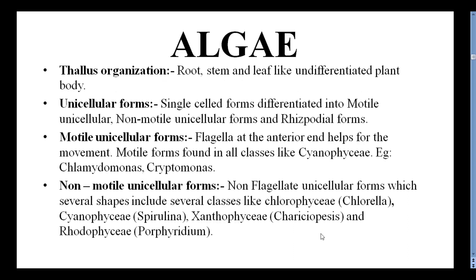What is the thallus organization and what is the plant body in algae? The root, stem, and leaf-like differentiated plant body is absent. Instead, a thallus is present. It can be unicellular — both motile and non-motile unicellular forms exist. Some forms also include rhizoporeal forms, where rhizopodea is used for the movement of the thallus.